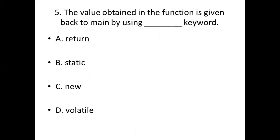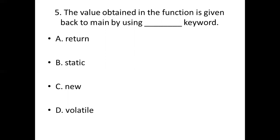Fifth bit. The value obtained in the function is given back to main by using blank keyword. Option A: return. Option B: static. Option C: new. Option D: volatile. Answer: Option A, return.